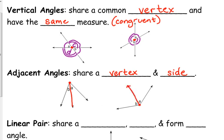Okay, so the vertical angles, they don't share a side. They are formed by two intersecting lines, but they don't have a side between them.